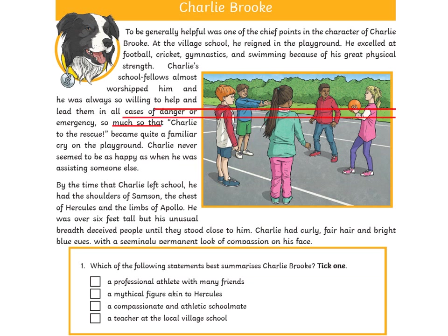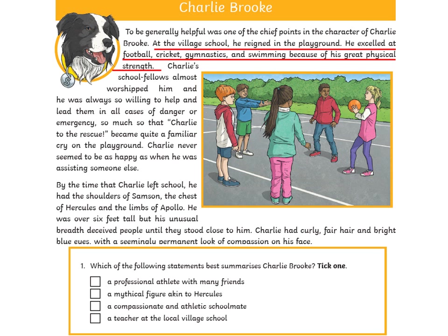If we highlight the key information about who Charlie Brooke is, the text tells us he was very good at football, cricket, gymnastics, and swimming. We also find evidence that Charlie never seemed to be as happy as when he was assisting someone — that word 'compassionate' means you like to help people. Since he's a good athlete who loves helping others, the answer must be: a compassionate and athletic schoolmate.